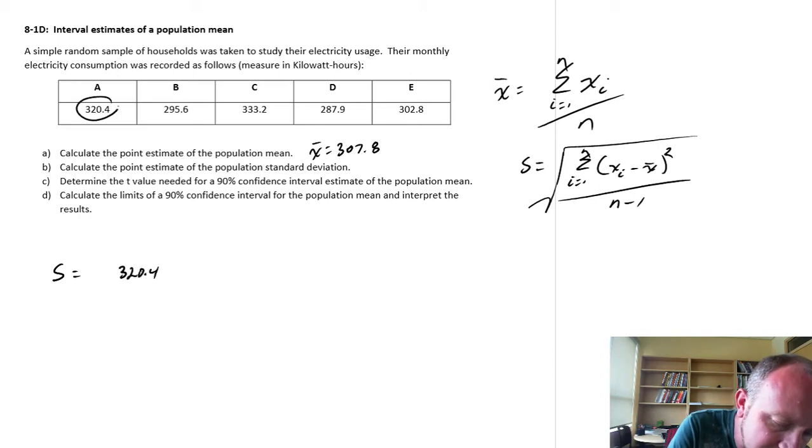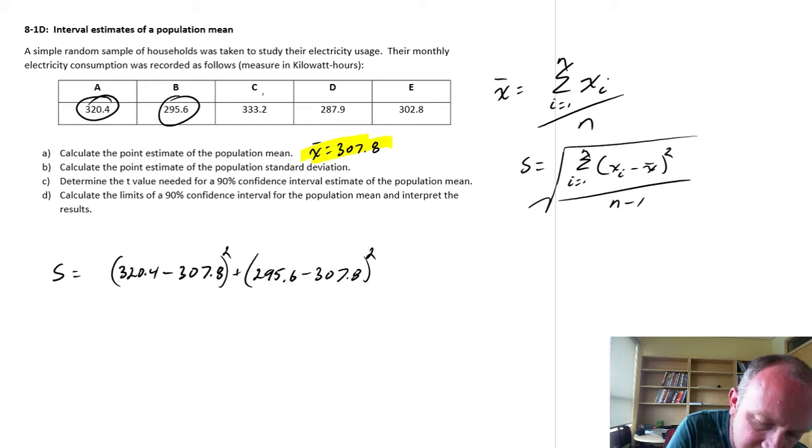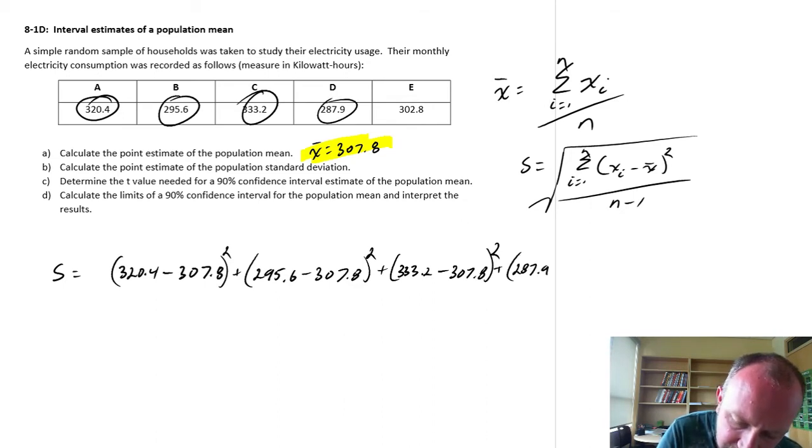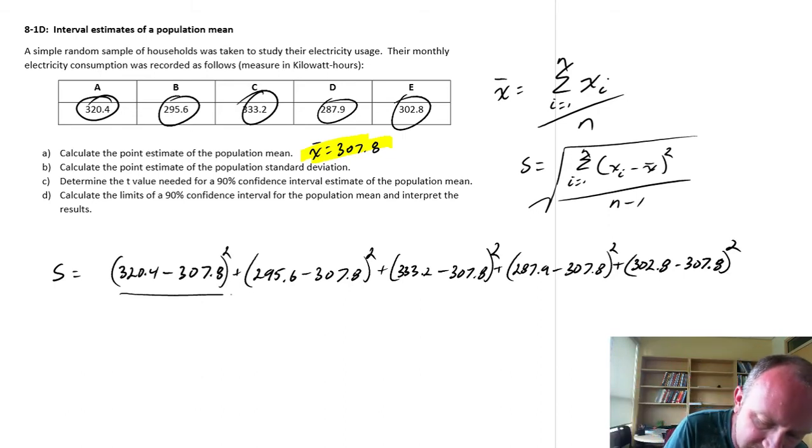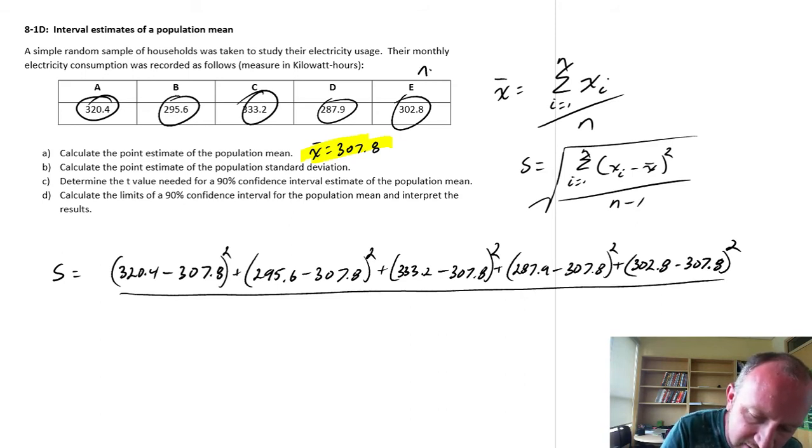320.4, I'm starting here. And we always use this as our sample mean, of course. So 320 minus 307.8 squared plus, the next one is here, 295.6 minus 307.8 squared. Next is here, 333.2 minus 307.8 squared. And then the next one, 287.9 minus 307.8. And finally the last one, 302.8 minus 307.8 squared. So there's our numerator, all of this. And then we divide this by n minus 1. We have n is equal to 5. So this is 5 minus 1. And then we take the square root of all of that business.